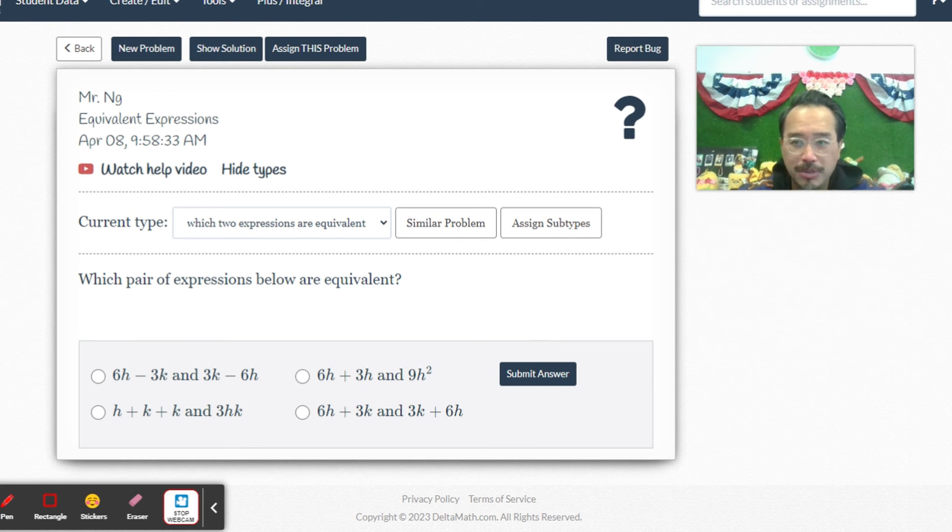Let's see which pair. You gotta look at the four choices, see which one they're equivalent, and the ones that are not you just eliminate them immediately. So I'm just gonna look at the first one: 6h minus 3k. No, that's not true.